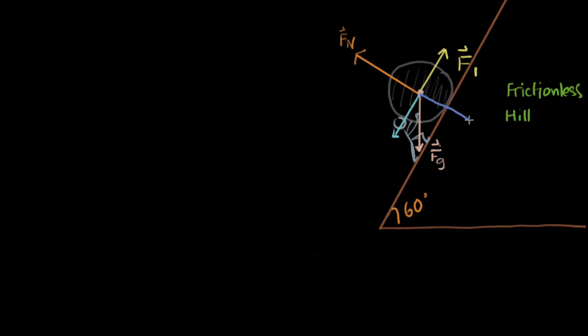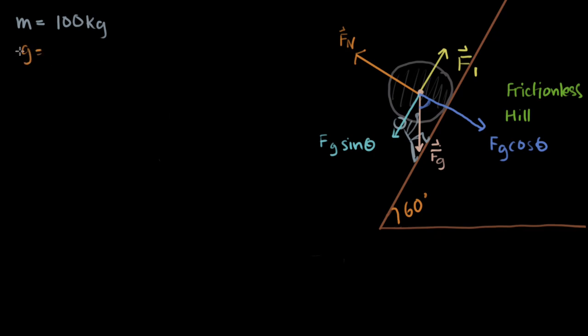Note that Sisyphus is pushing the boulder at a constant velocity — that's important. Constant velocity means acceleration equals zero. By Newton's first law, there is no unbalanced force, so no change in state of motion. That means acceleration is zero and velocity is constant.